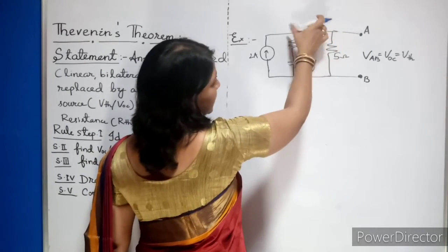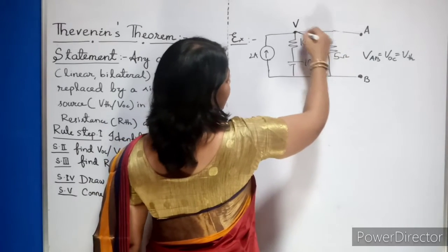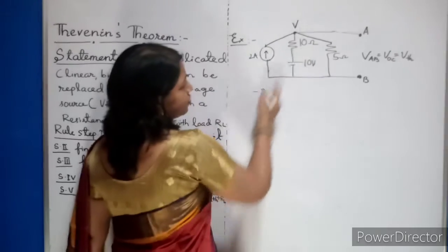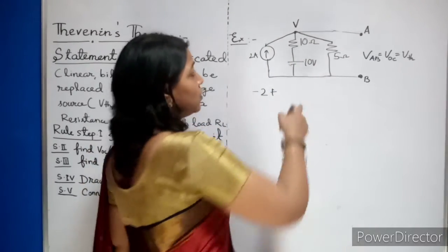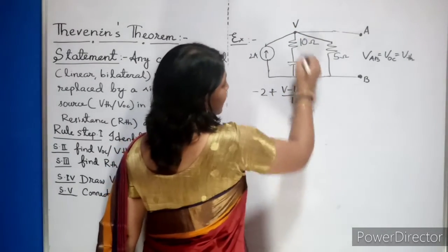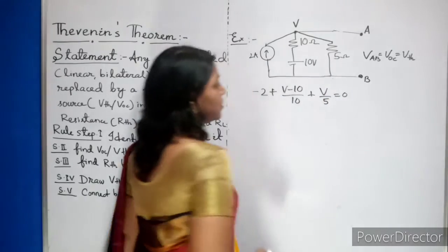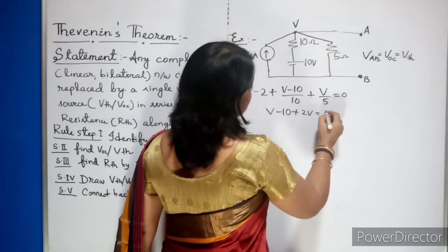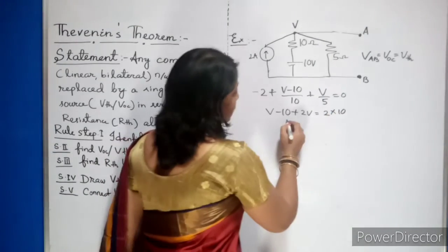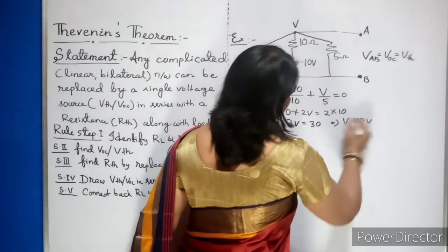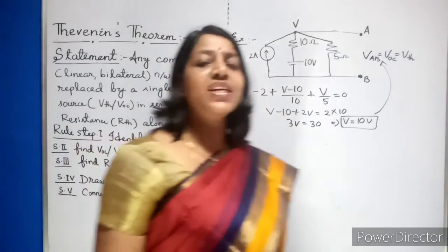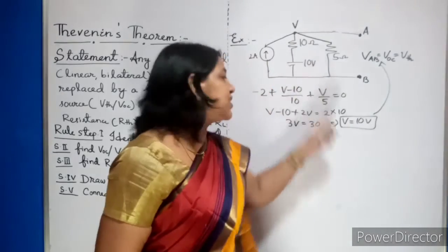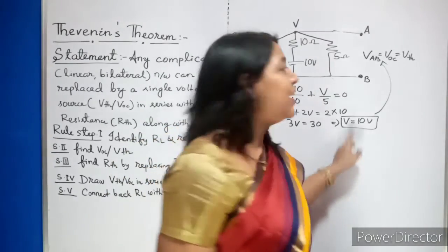Imagine these two points form a single node with voltage V. The incoming current from the source is minus 2. Assuming the node is at higher potential, applying KCL gives: (V minus 10)/10 plus V/5 equals 0. Taking LCM: V minus 10 plus 2V equals 20, so 3V equals 30, giving V equals 10 volts. This is your open circuit voltage, or Thevenin's voltage VTH.